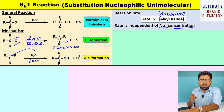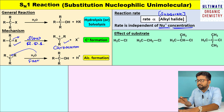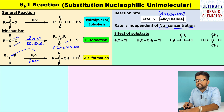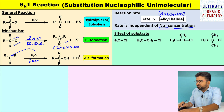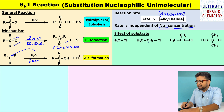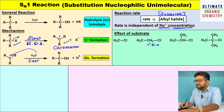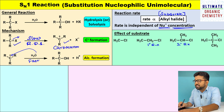Now let us discuss the effect of substrate in SN1 reaction. I have given four molecules here: the first is methyl chloride, the second is ethyl chloride, the third is isopropyl chloride, and the fourth is tertiary butyl chloride. These are examples of methyl halide, primary alkyl halide, secondary alkyl halide, and tertiary alkyl halide respectively.